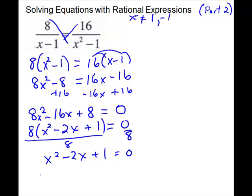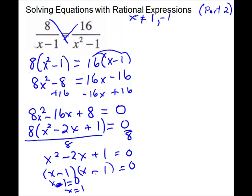This one will factor. Set each factor equal to 0 — it's going to give us the same answer both times. X minus 1 equals 0, so x equals 1. But look back at your exclusions — we threw 1 away. So that's the answer we're getting, but since we threw it away, there is no solution.